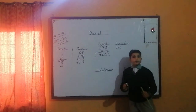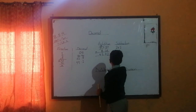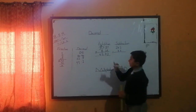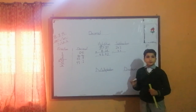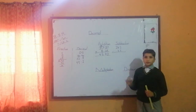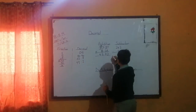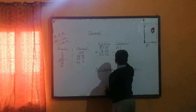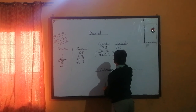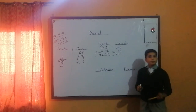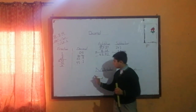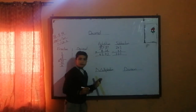24.2 minus 4.1. The answer is 20.1. Now I will tell you about decimal multiplication.